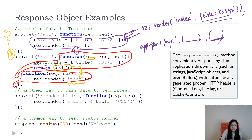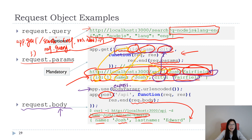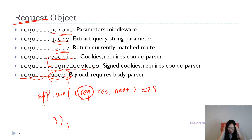These three approaches — passing locals in render, using response.locals, and chaining middleware — all do exactly the same thing, just in different ways. Another example shows using response.status to explicitly set a status code and pass a string to the client. That covers the request and response objects. If you want to use any of these, you can also check the Express API documentation since you don't need to memorize everything.